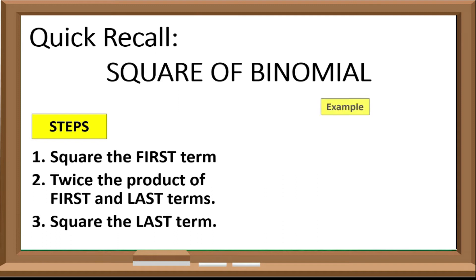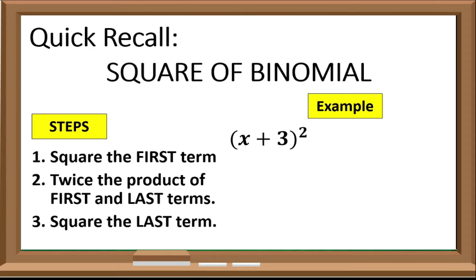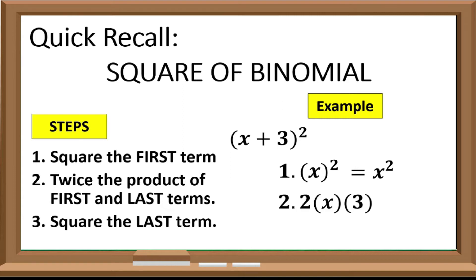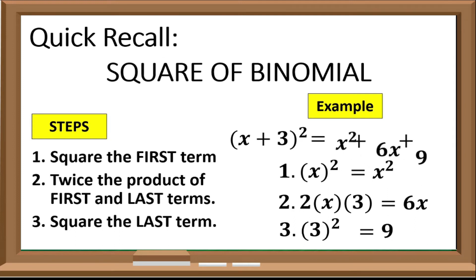Let us take this example: the square of the quantity (x + 3). For the first step, the square of x is equal to x squared. For the second step, 2 times x times 3, that is 6x. For the third step, the square of 3 is equal to 9. So the square of the quantity (x + 3) is equal to x squared plus 6x plus 9.